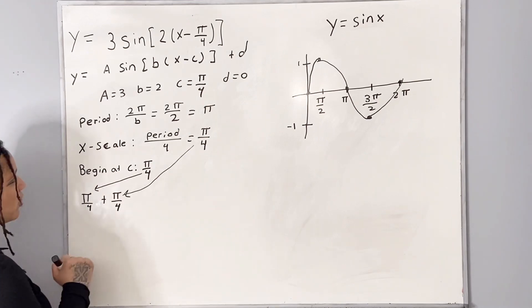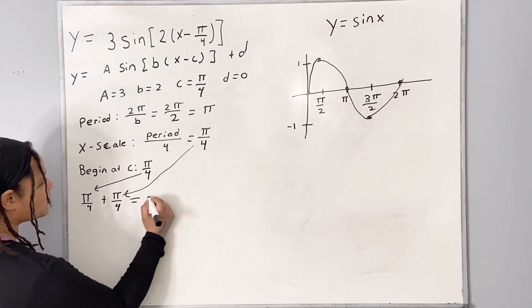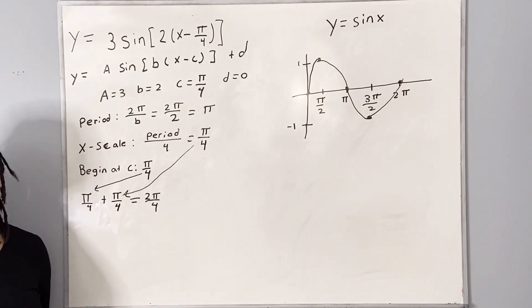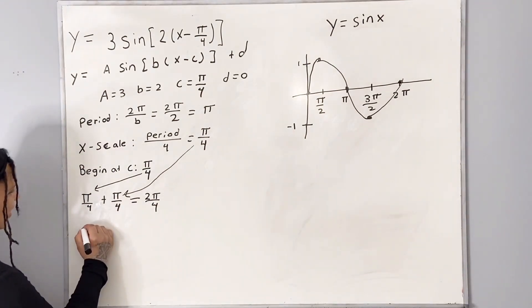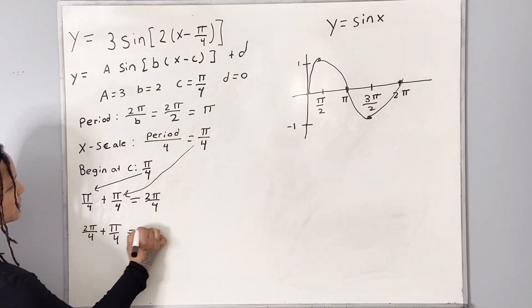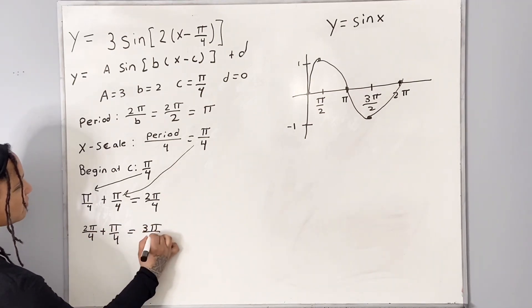So pi over 4 plus another pi over 4 is equal to 2 pi over 4. We will reduce our fractions at the end. 2 pi over 4 plus another pi over 4 is equal to 3 pi over 4.